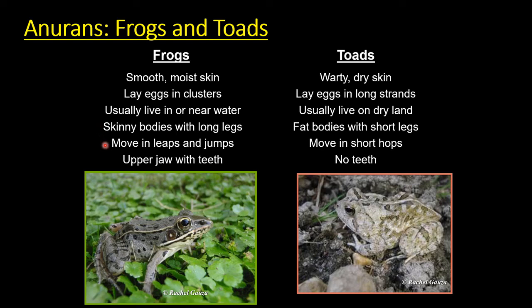Frogs move in leaps and jumps — large distances in a single jump — and their upper jaw can have teeth, though not really in North Dakota. Toads have thicker, drier, wartier skin; they lay eggs in strands rather than clusters; and aside from reproducing, they're generally found farther from water because their thicker skin reduces dehydration. Toads have shorter, stouter bodies and shorter limbs relative to their size — they hop rather than jump — and neither jaw has teeth.